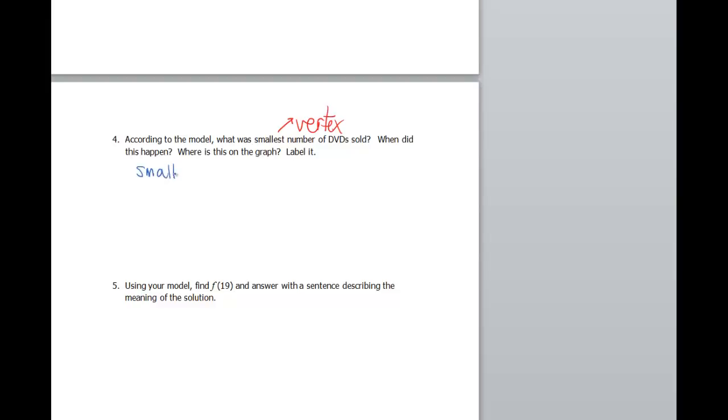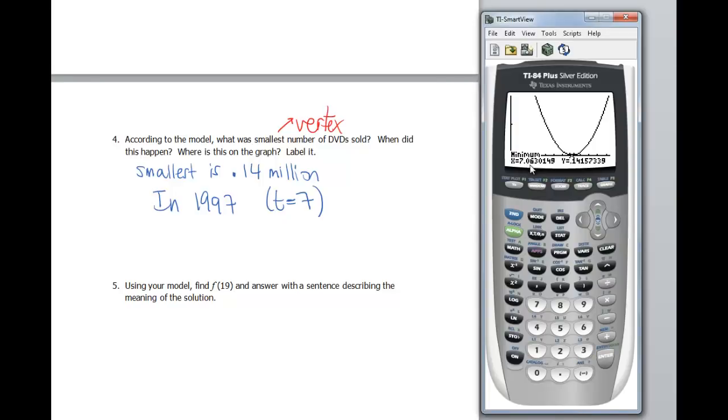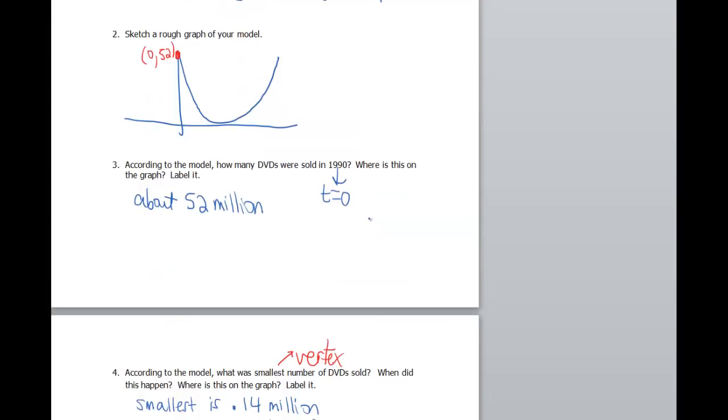So the smallest number, that means it wants the y value. So the smallest is 0.14 million. Okay, when did that happen? That was in 1997, because remember our t was 7 there, ish, if you want to add a little bit more to that, you could. But remember, it said 7.06, close enough to 7, and 0.14. So that's our vertex. Okay, where is it on the graph? Well, we already said it's the vertex, but let's go ahead and label it. So I'm going to go back up here, take my green, and we'll label that about right there. So that's our smallest number.